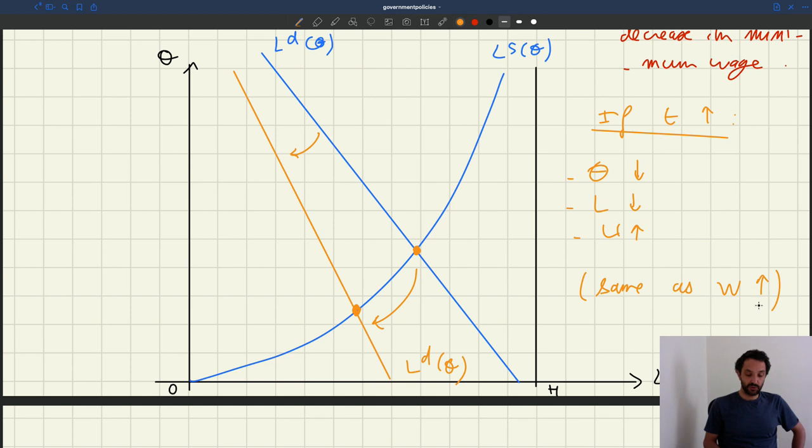And if you reduce the payroll tax, what was proposed by the White House, that would boost your labor market. So it would look something like this.